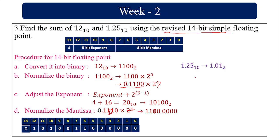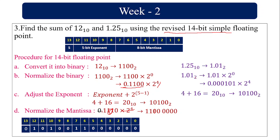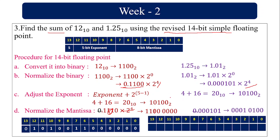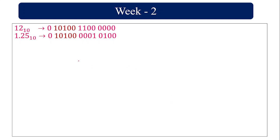Similarly, 1.25 is also converted into 14-bit format: convert to binary, normalize the binary value, and adjust the exponent. Make sure both exponents are 2 power 4 so that the sum can be computed. Here the exponent should also be 2 power 4.